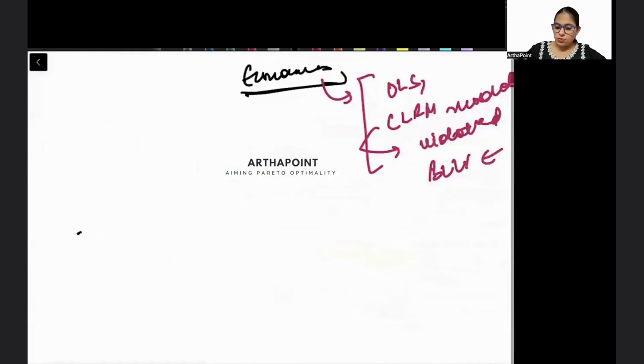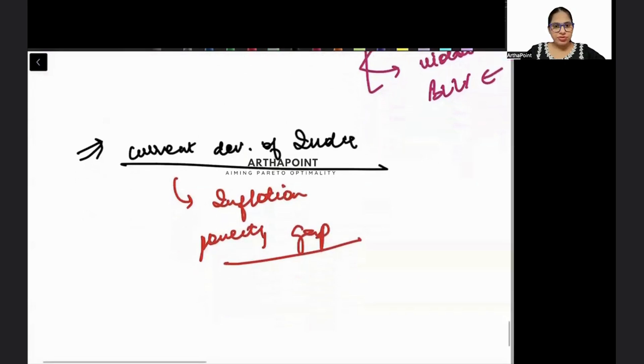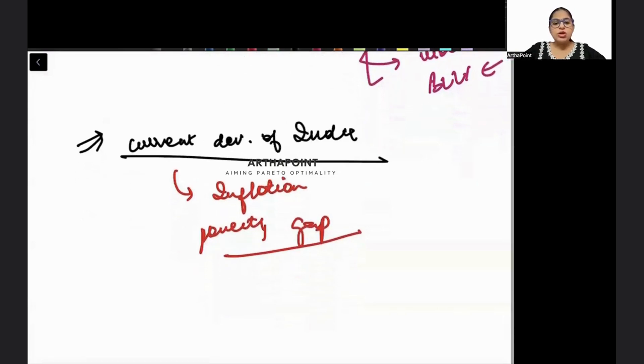And at last, you need to know some of the current developments of India. In current development, you need to know what is the inflation currently, what is the poverty gap ratio currently, what is unemployment rate currently, how are the different sectors performing in India. So this is going to be your Phase 1 syllabus. I hope I have made you aware about Phase 1 thoroughly. In the next session, I will go ahead and discuss the strategy of Phase 2 also. Thank you.